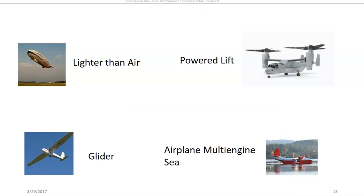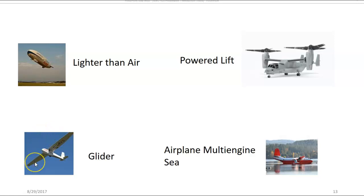Here are some examples of aircraft category as it applies to airman certification. A lighter than air category includes an airship, otherwise known as a dirigible or a blimp. Gliders are unpowered aircraft — they do not have a power plant. Powered lift category aircraft is designed to take off vertically. Airplane multi-engine sea class is an airplane that has more than one engine and is designed to land in water.